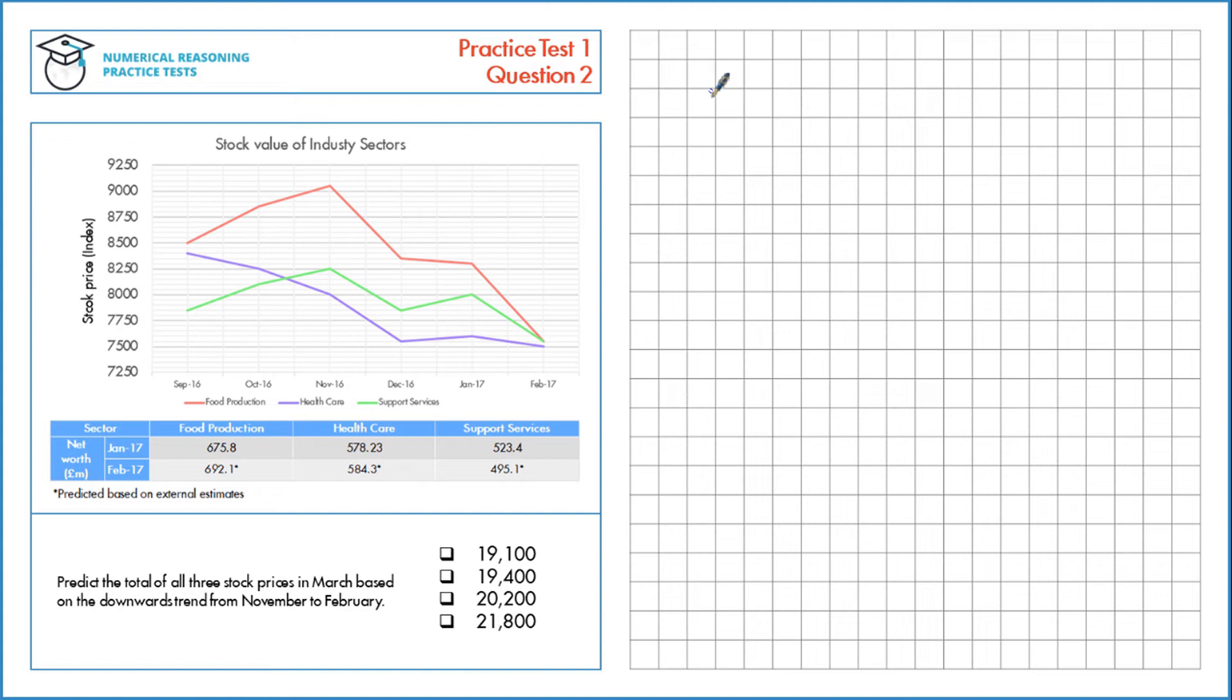Predict the total of all three stock prices in March based on the downwards trend from November to February. First let's look at the total for the November values. In November we have 9,050 plus 8,250 plus 8,000 equals 25,300.